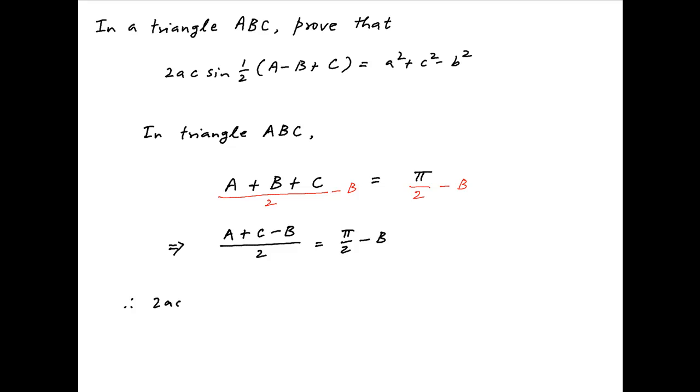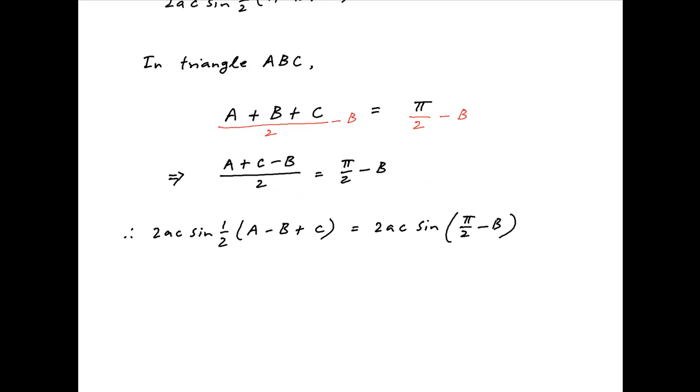Now, take the sine of both sides and multiply by 2AC. We get on the left-hand side 2AC times sine of half of A minus B plus C and this is equal to 2AC times sine of pi upon 2 minus B.